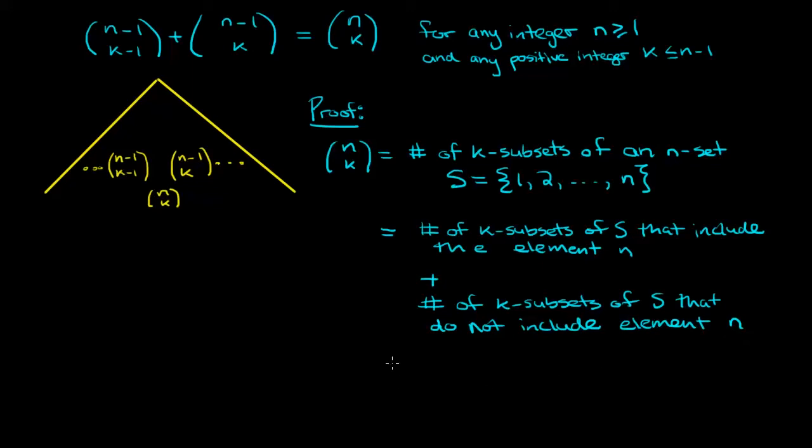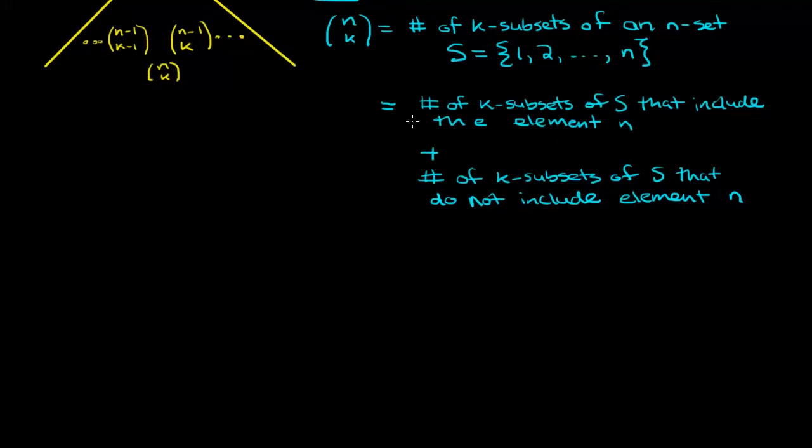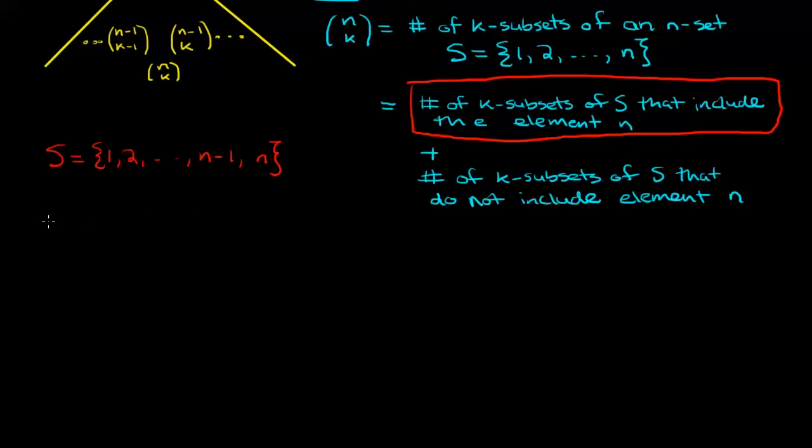Now let's think about how we would calculate each of these two numbers. Let's first think about how we'll be able to calculate the number of k subsets of S that include the element n. So over here, I'll write down the set S again, and let's say we're creating a subset and we want to figure out how many ways there are to do this. The subset is going to be a k subset, and we know we're going to include the element n. So that one goes in. Now, since it needs to be a k subset, we need k minus one more elements to go in. And we have a total of n minus one elements to choose from at the moment because we've already used up n. So that means we need the number of ways to choose k minus one elements from a set of n minus one. And that's how we get n minus one choose k minus one.